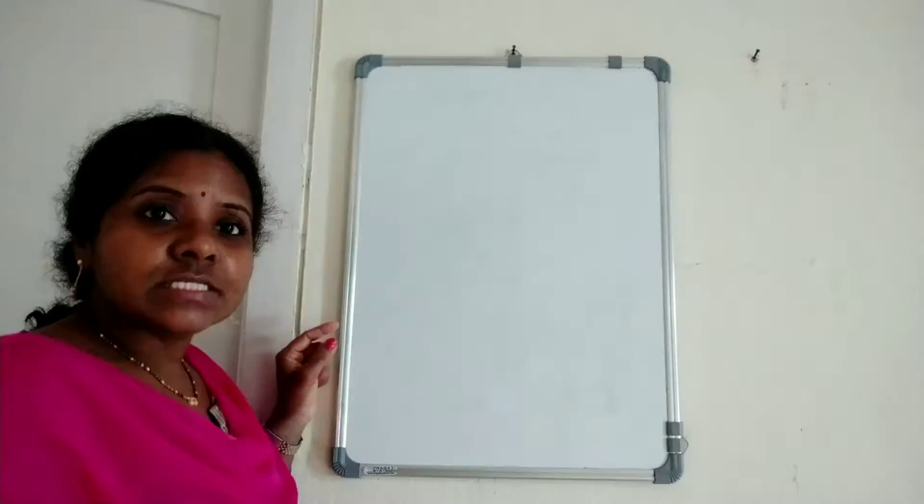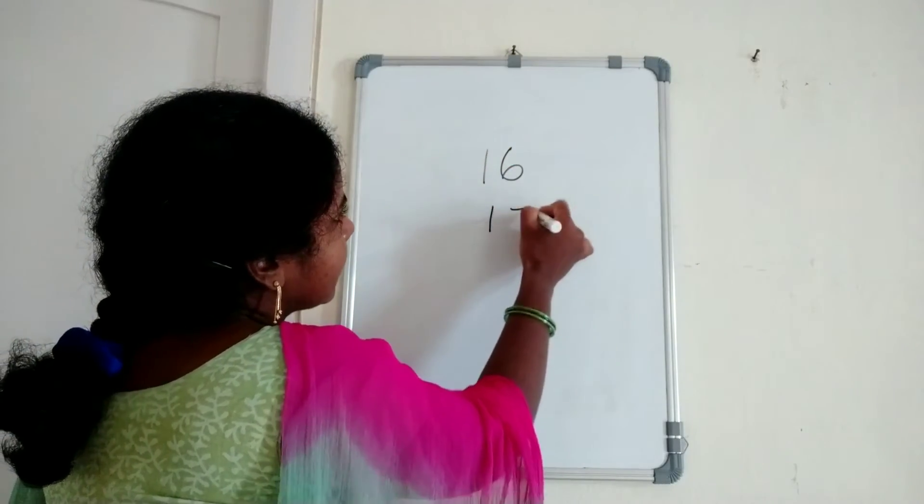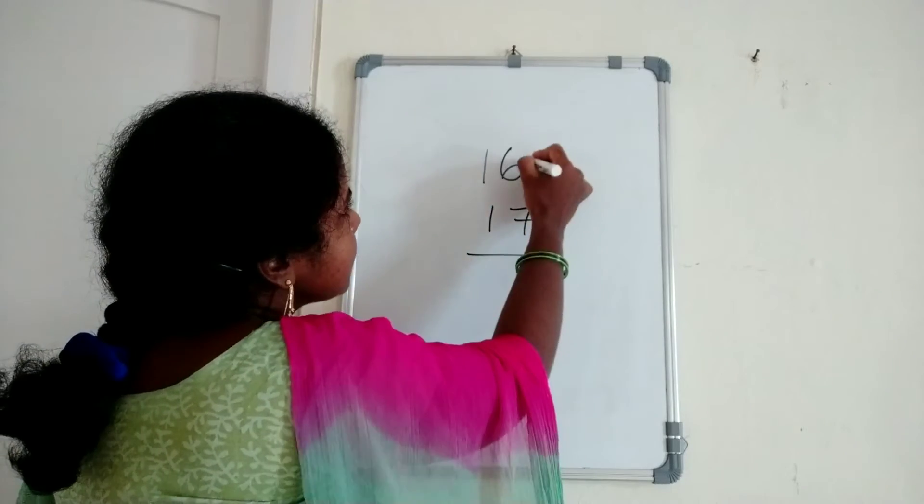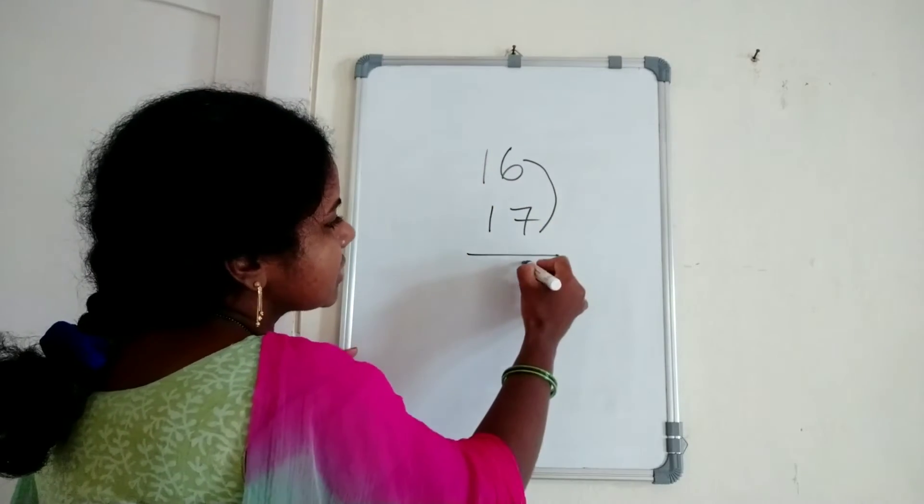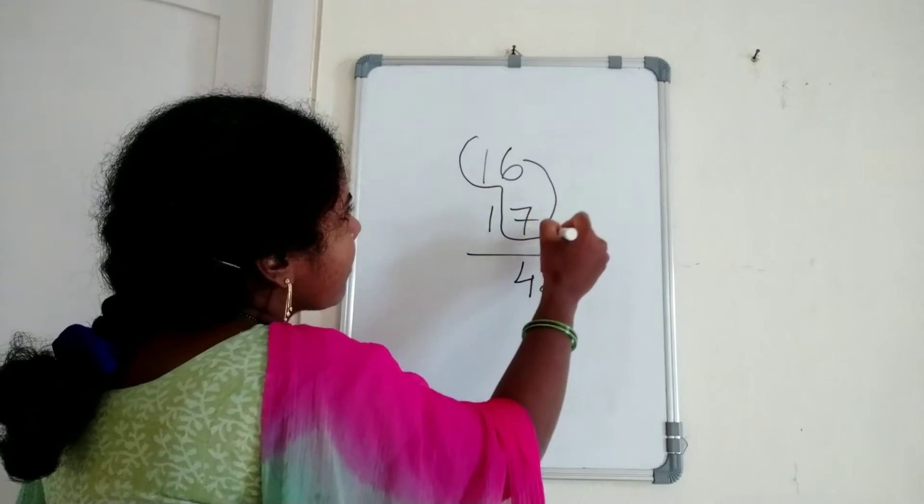16 times 17. First, multiply 6 times 7. 6 times 7 equals 42. Then add 16 plus 7.